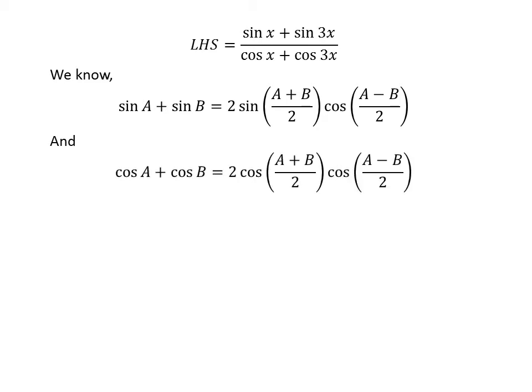We also know the famous trigonometry identity: cosine of A plus cosine of B is equal to 2 times cosine of half of (A plus B) times cosine of half of (A minus B).